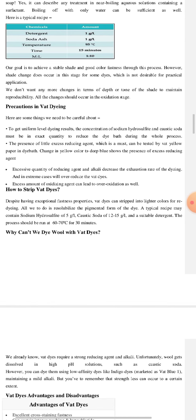Now we'll talk about some of the precautions that should be kept in mind during vat dyeing. To get uniform level dyeing results, the concentration of sodium hydrosulfite and caustic soda must be in exact quantity to reduce the dye bath during the whole process. Because excessive quantity of reducing agent will over-reduce the dye type. And the presence of little excessive reducing agent, which is somehow a must, can be tested by wet yellow paper and dye bath. Change in yellow color to deep blue shows the presence of excess reducing agent. On the other hand, excess amount of oxidizing agent can also be dangerous because it can lead to over-oxidation as well.